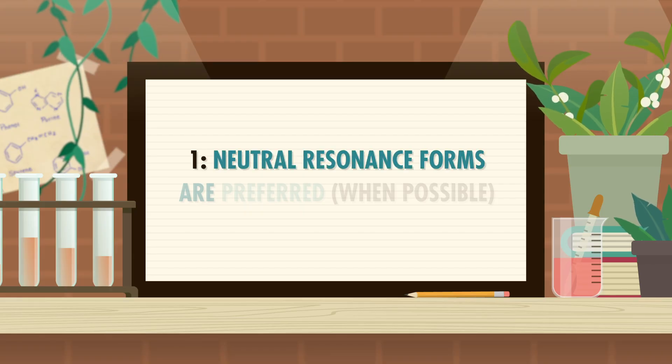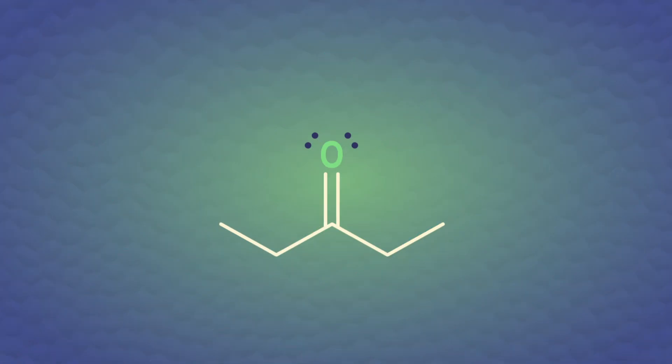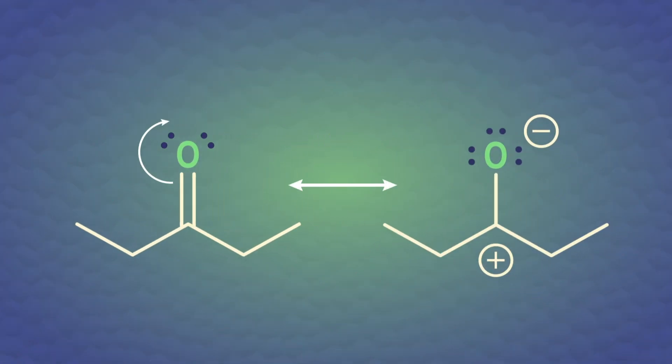Number one, neutral resonance forms are preferred when possible. So, for example, this is better than this. Number two, keep an octet of electrons on oxygen and nitrogen, but carbon can be short.